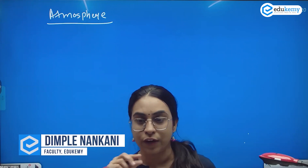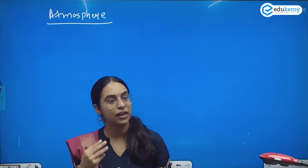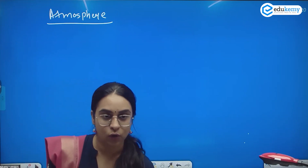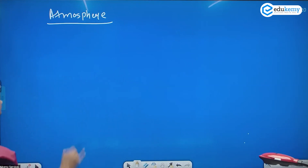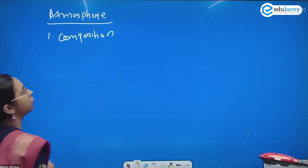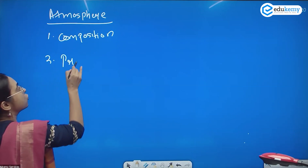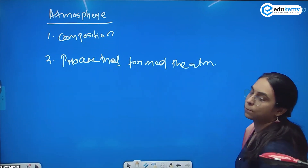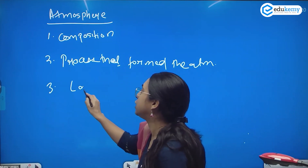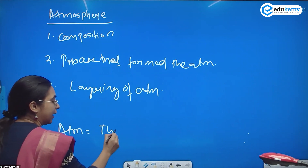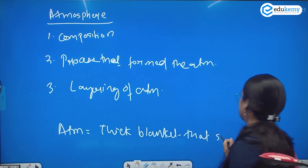Starting off with atmosphere, we already understood about the composition of atmosphere while referring to the formation of the planet Earth as a planet. We understood why Earth has a very different type of atmosphere. So we already know about the formation of atmosphere. If I look at atmosphere, I can study two or three things: the composition of atmosphere, the processes that formed the atmosphere, and the layering of atmosphere. Atmosphere is a thick blanket that surrounds the Earth.